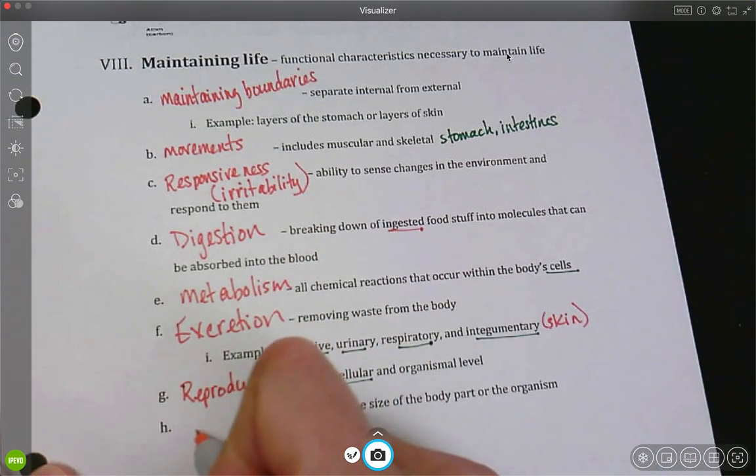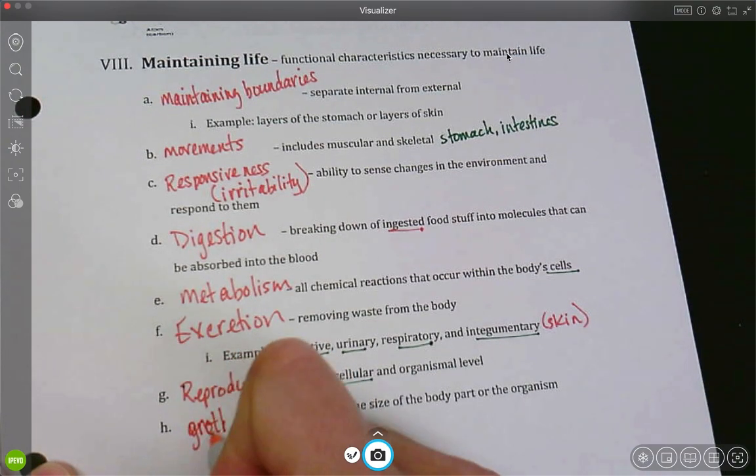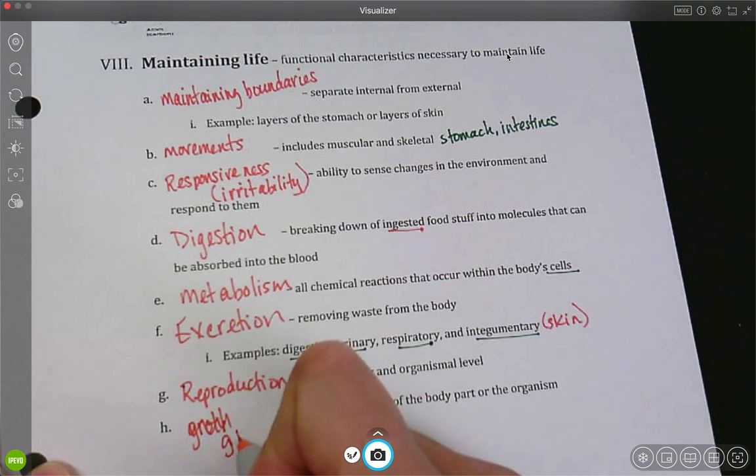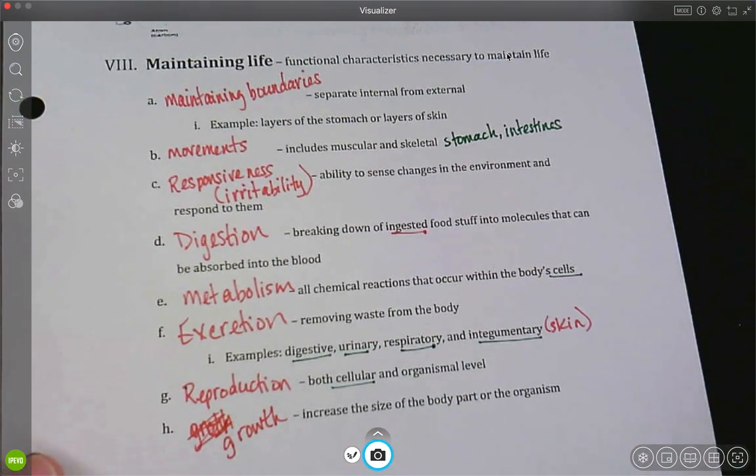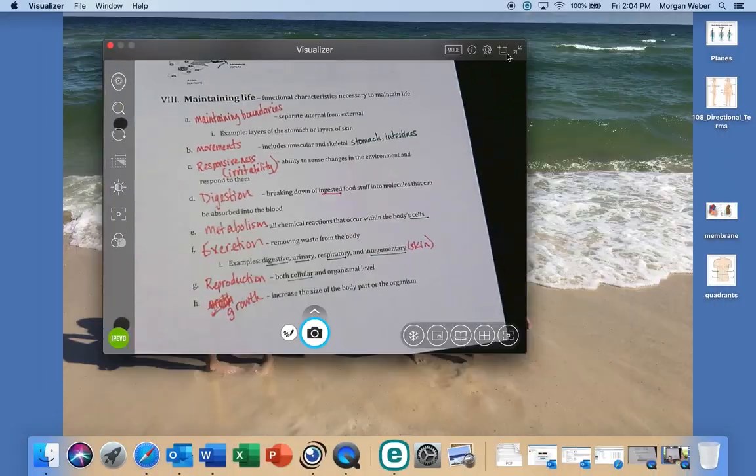And then the last one is growth. So it's not just grow tall, but my heart has to get bigger, my brain should change size, my eyes change size. So internally, I need to have my organs growing and changing. My muscles have to get bigger.